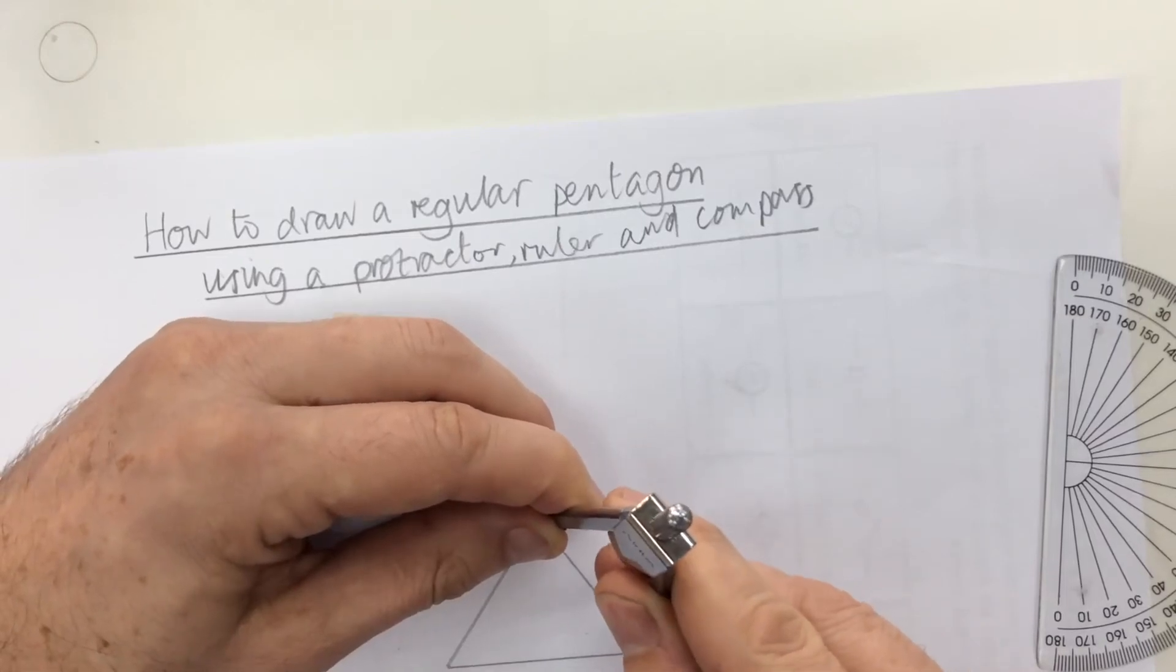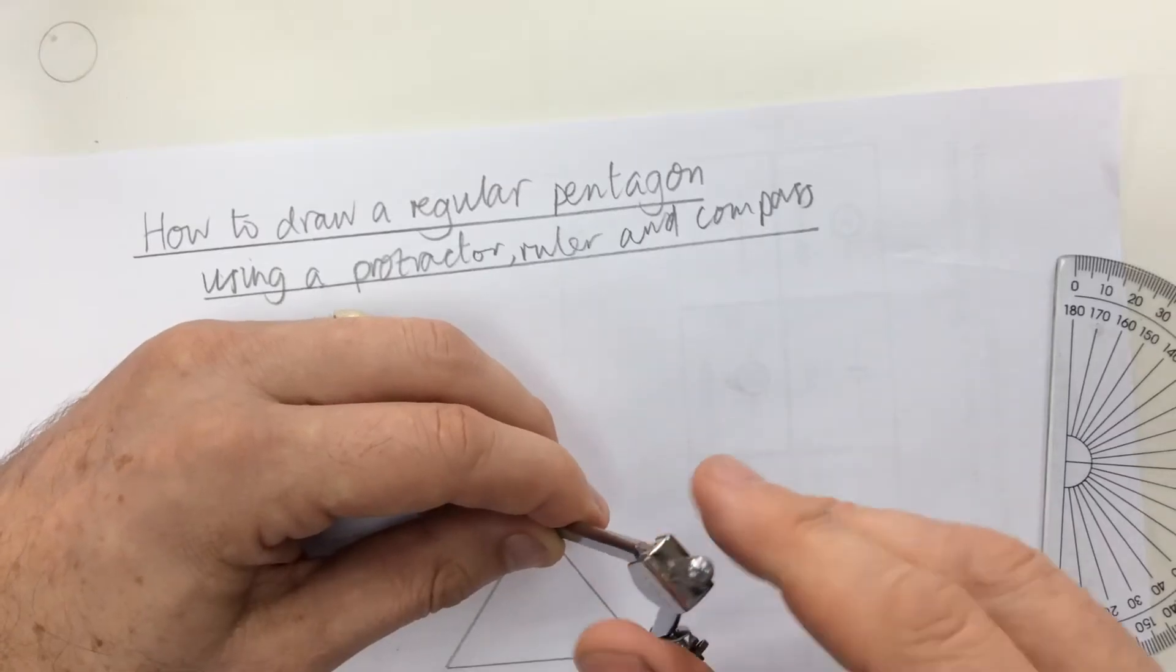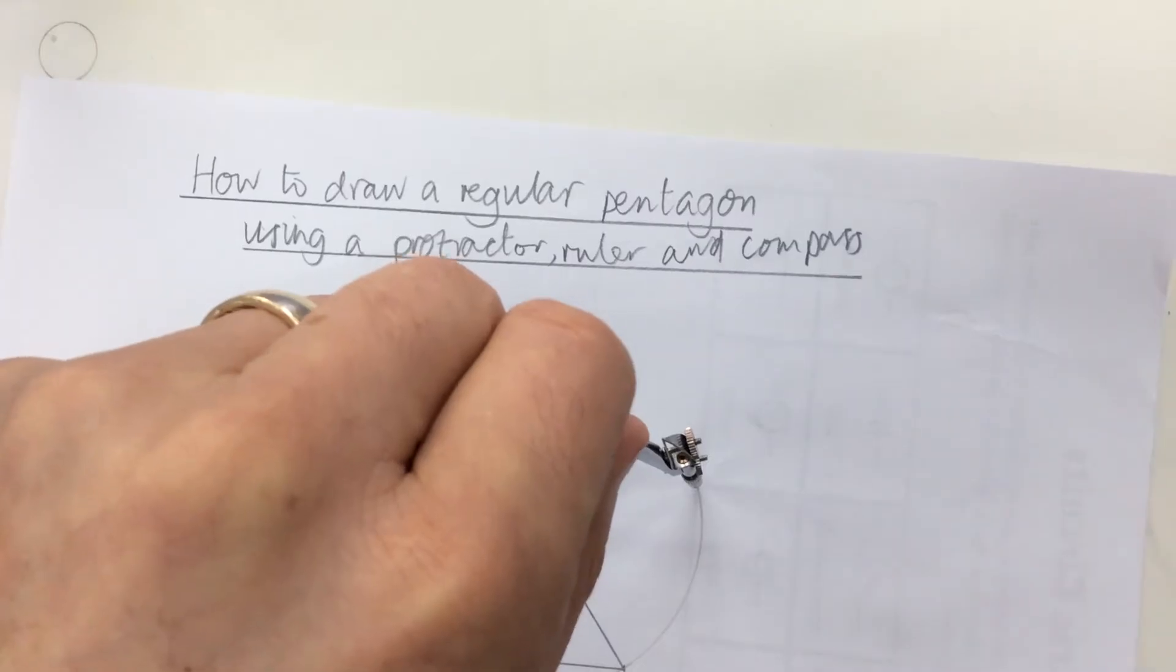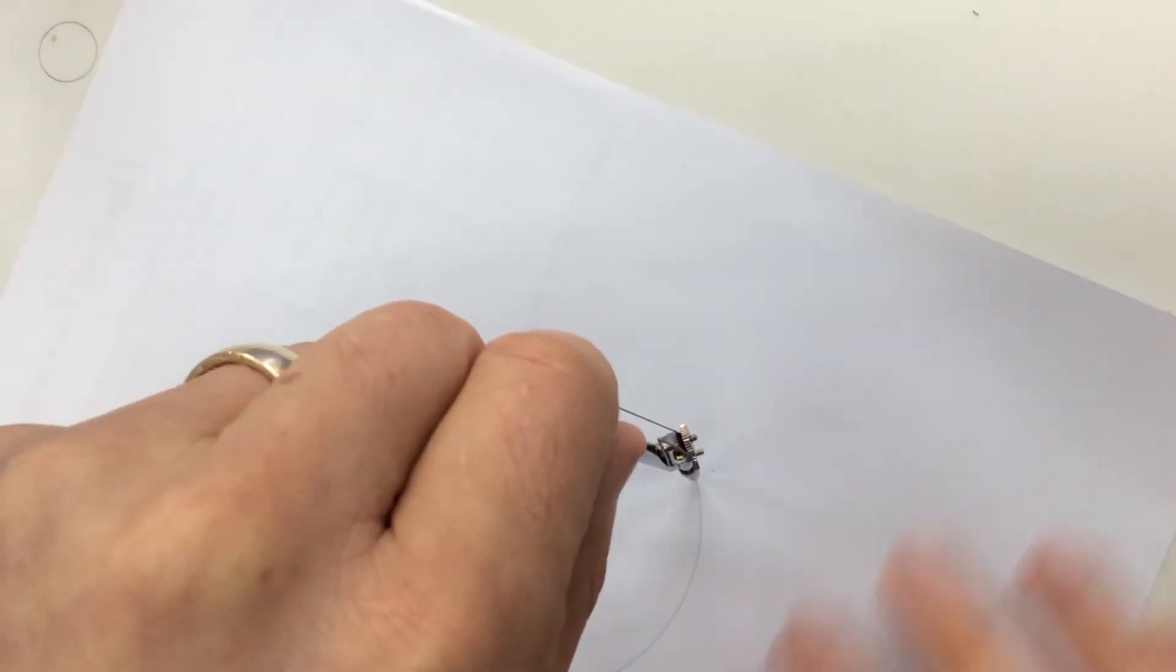So carefully set the compass so it's the right distance. It's always good to turn around the paper.